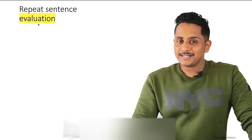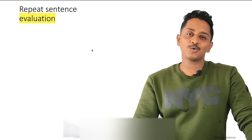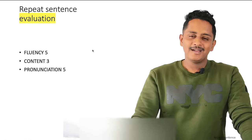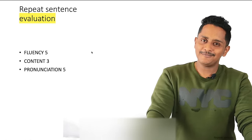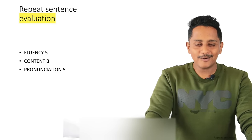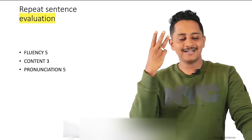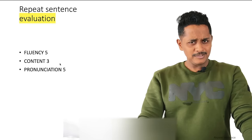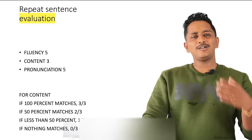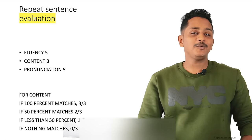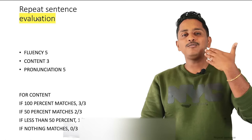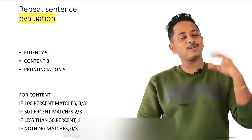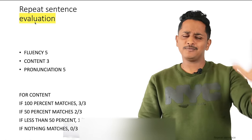How are you evaluated? Before we get into the new strategies, let's understand the evaluation because the new strategy will be based on it. According to the Pearson official score guide, which you can download from the internet: fluency is 5 marks, content is 3 marks, and pronunciation is 5 marks.